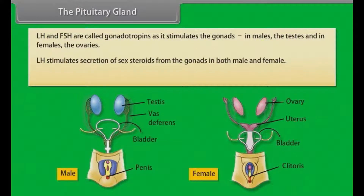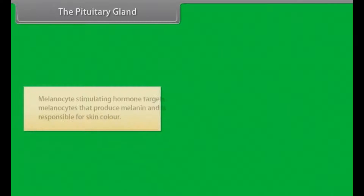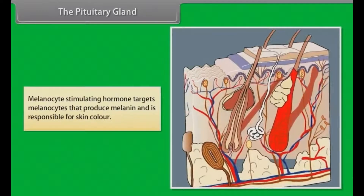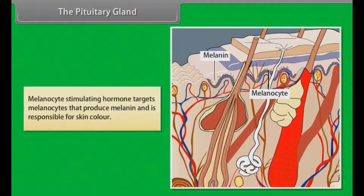LH stimulates secretion of sex steroids from the gonads in both males and females. FSH stimulates the maturation of ovarian follicles and is also critical for the production of sperm. Melanocyte stimulating hormone targets melanocytes that produce melanin and is responsible for skin color.